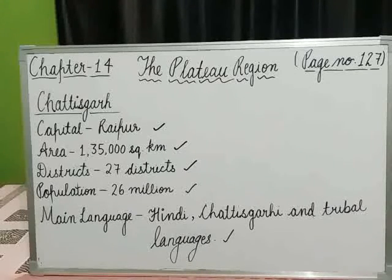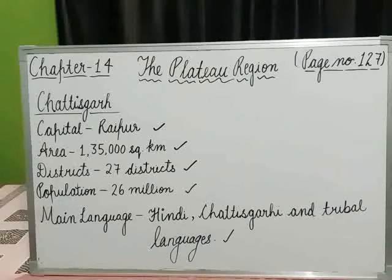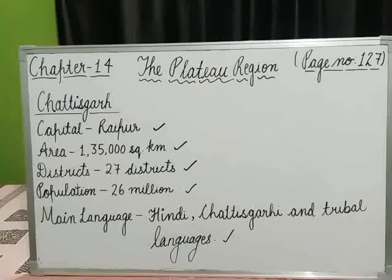Chhattisgarh is surrounded by Madhya Pradesh and Maharashtra in the west, Odisha in the east, and Jharkhand and Uttar Pradesh in the north, as shown in the map. It is a landlocked state, meaning its borders do not touch any water bodies like sea or ocean.